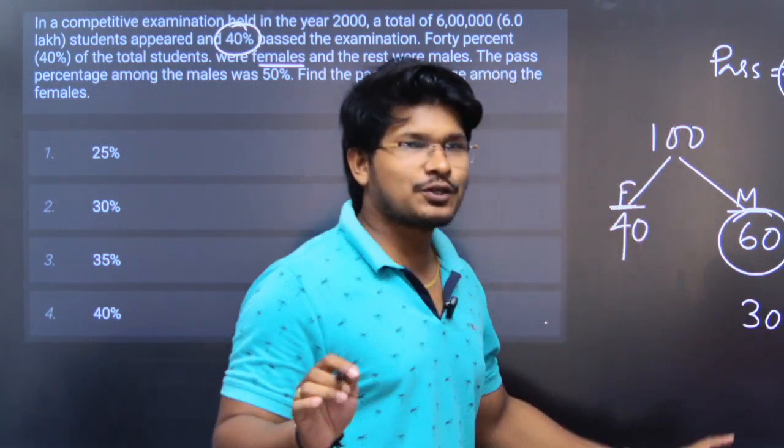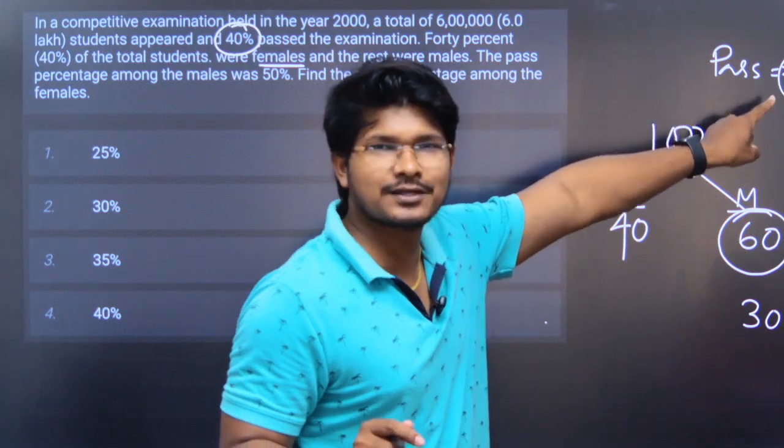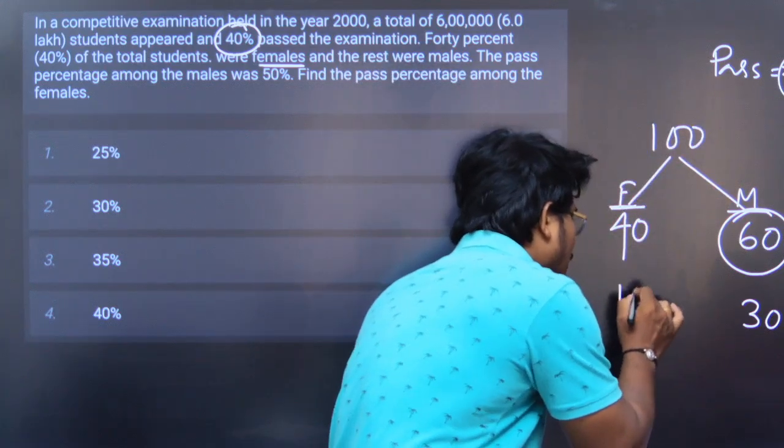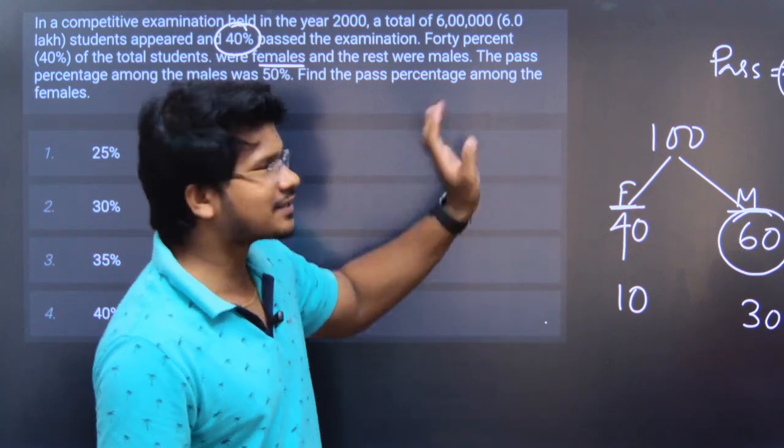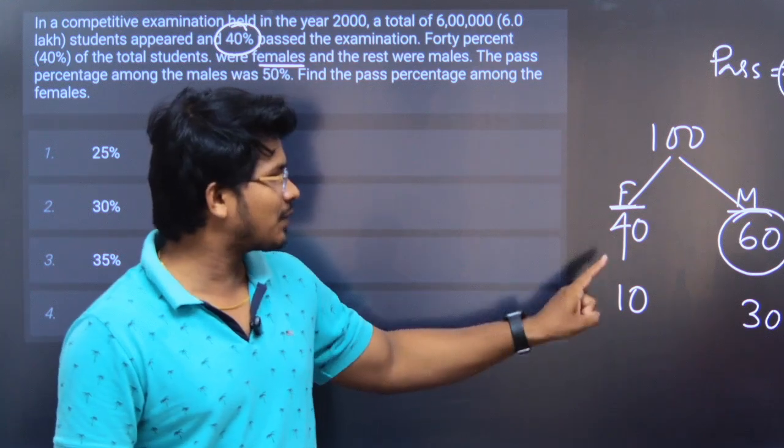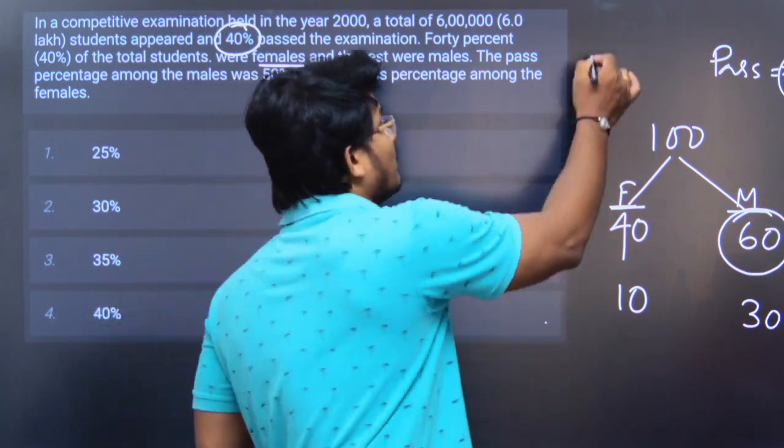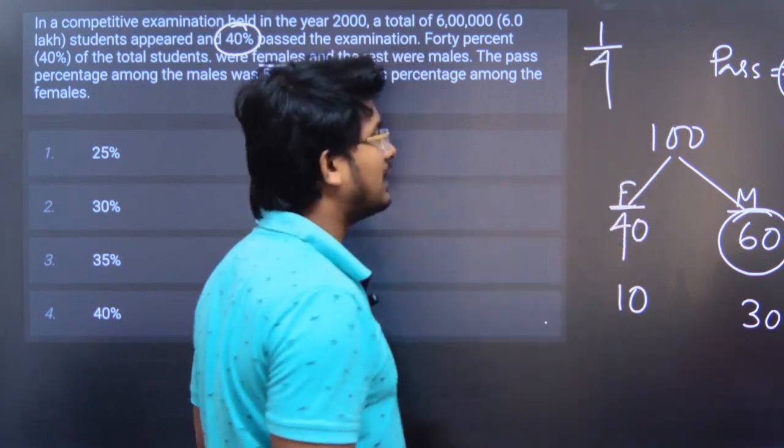If 30% are males who passed and the total pass rate is 40%, then 10% are females who passed. Since females make up 40% of all students, the female pass percentage is 10 divided by 40, which equals 25%.